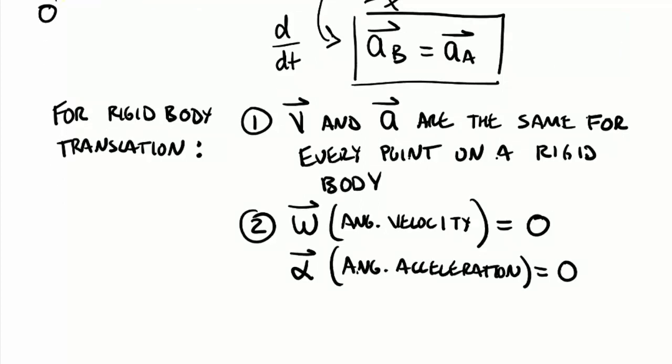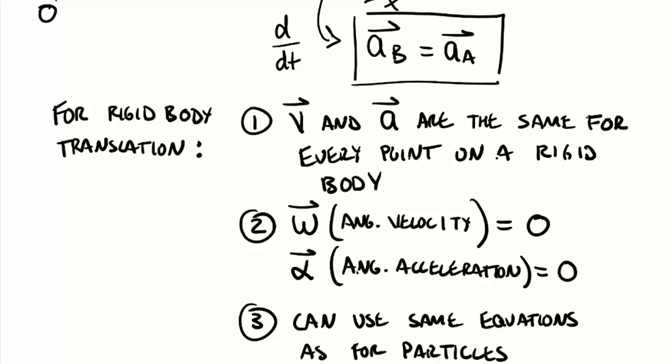And so the last statement we can make that brings things together is basically saying that because these things are true, the equations we use for particles, we can use the same equations for rigid bodies in translation. So we can use the same equation as for particles. Which, once again, flipping this sentence around is basically saying we can treat any non-rotating body as a particle. It would be another way we could say that.